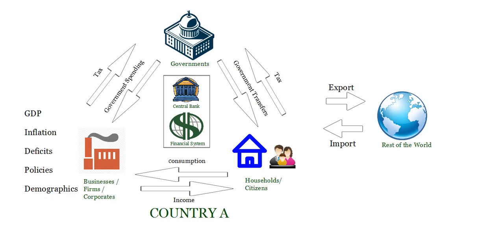The next thing is policies. When we say policies, we mean the rules, guidelines, or decisions that governments take in running the country and framing its laws, and the decisions that central banks take in controlling the money supply, which in effect controls the price levels in the country.